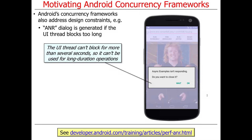Otherwise, you'll end up getting the dreaded Application Not Responding, or ANR, dialog popping up. If you've ever written an Android app that did too many things in the main thread, you'll get something like this — it'll say something or other isn't responding, do you want to close it? You can either close it or wait and let it run a little longer. This means the UI thread cannot be used for things that run for a long time, like downloading a big file or grabbing a lock that will be held for a while.